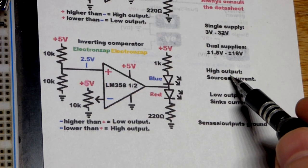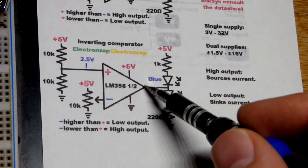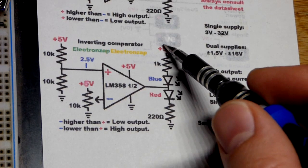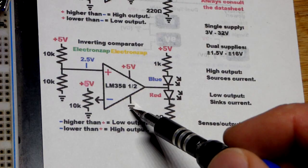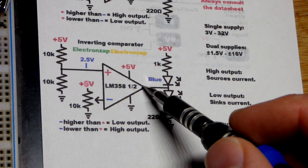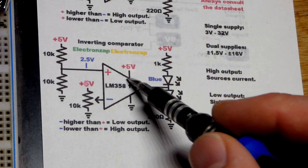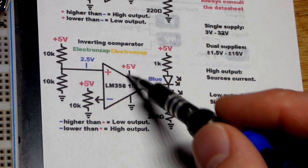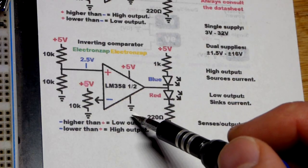When you hear of a current source or a current sink, if it's talking about an output, then a current sink takes the positive supply voltage and sinks it to ground. And a current source, when it's the output of, in this case, the op amp, means that the positive supply comes from the output and then it heads to ground. So it's the source of the power or it sinks the power.